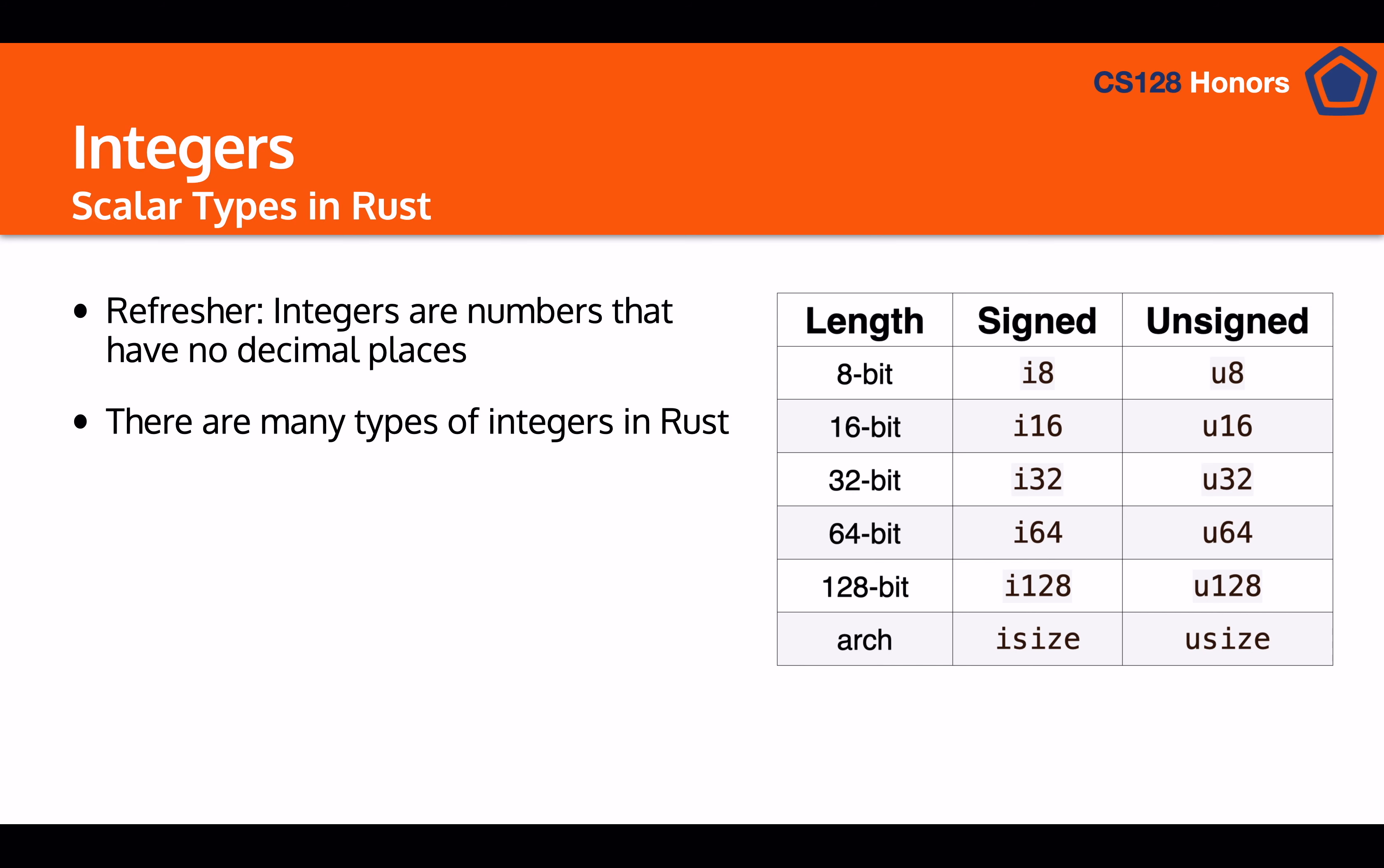So in Rust, there are many different types of integers. You can see this big table, all of these are types of integers. And so they're split into different categories, signed and unsigned, as well as 8-bit, 16-bit, 32-bit, and so on.